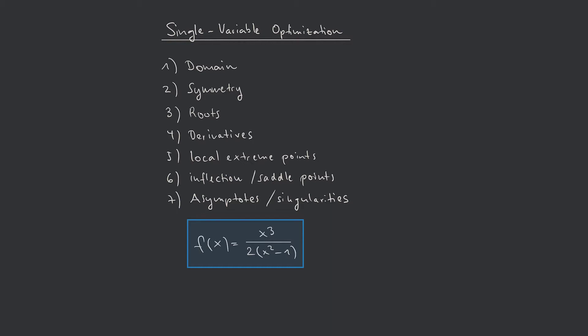Typically, a Single Variable Optimization is done in situations where we are not supported by computers. However, in this video we will several times look at the graph of the function which has been created by the computer. It helps us to understand and verify the results we will get in each of the seven steps. Let us directly start with looking at the graph to get a feeling of the function.